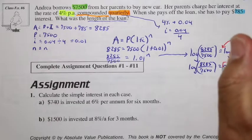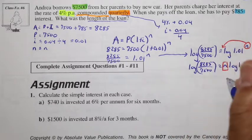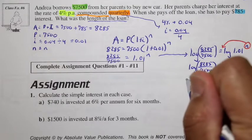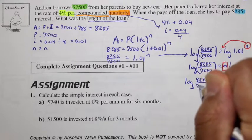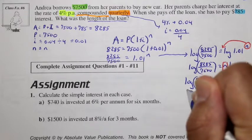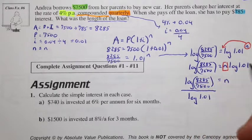Now isolating this N, N times this expression is equal to this. So N is equal to this whole thing, log of 8,285 divided by 7,500, and that's divided by log of 1.01.